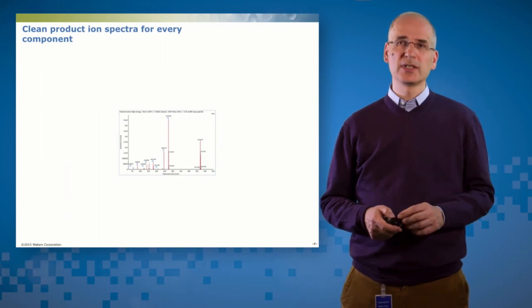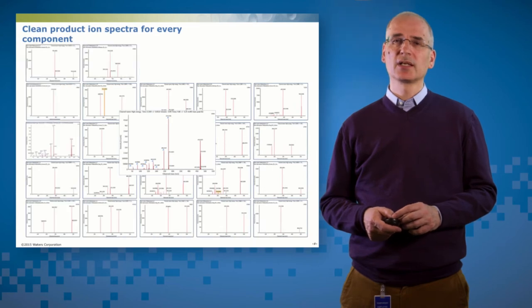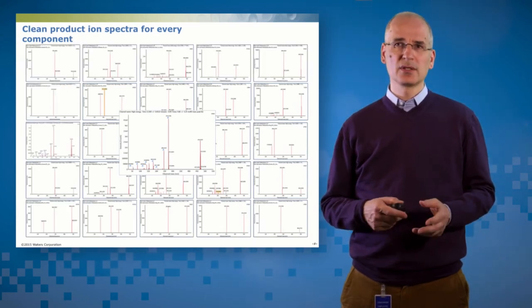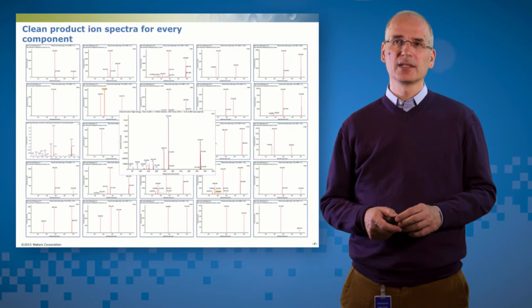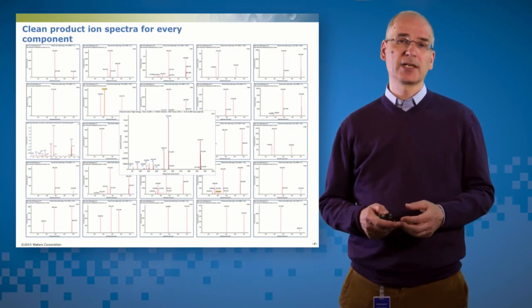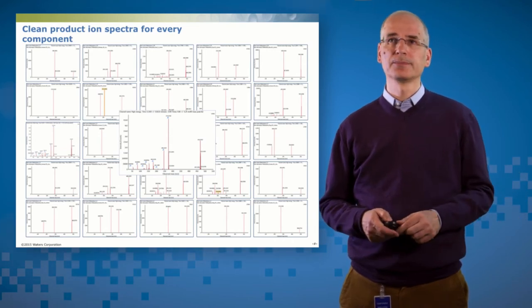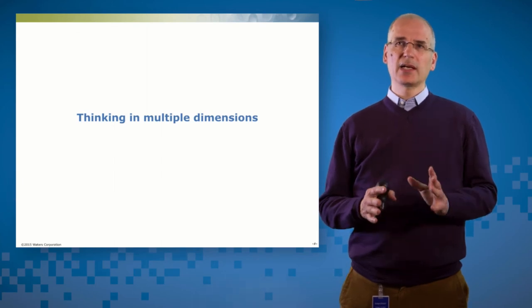And the beauty of HDMSE is this is a generic approach. So in this sample, there are around 25 to 30 metabolites. And by doing that drift time resolution, I can generate a clean product ion spectrum for every one of those with no preconditions, no data-directed acquisition. This is all in post-processing. So I have a clean product ion spectrum for every metabolite, irrespective of the nature of that component. In fact, I have a clean product ion spectrum for every component in this sample, all 600 or 700 of them.